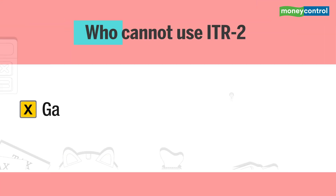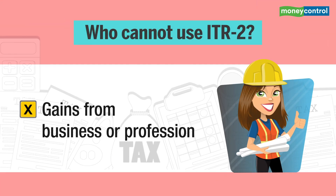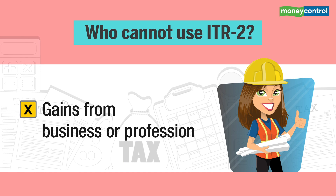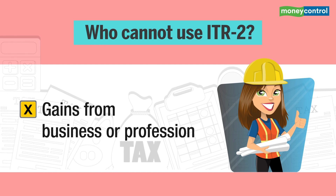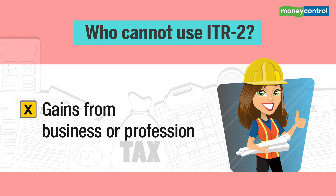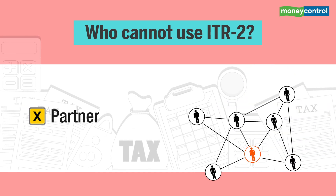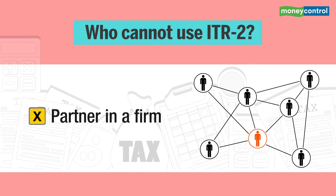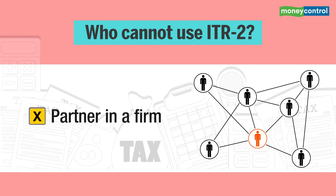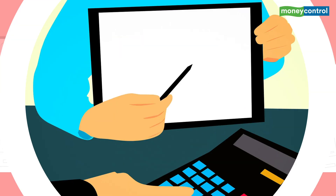Who cannot use ITR-2? It cannot be used by someone who had income from profits and gains of business or profession, or who is a partner in a partnership firm and has income.